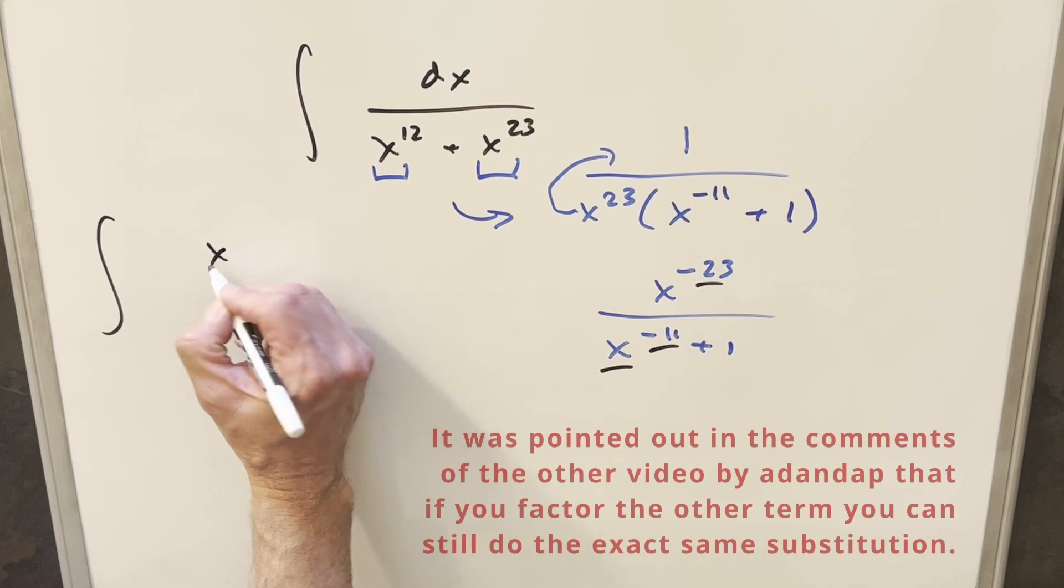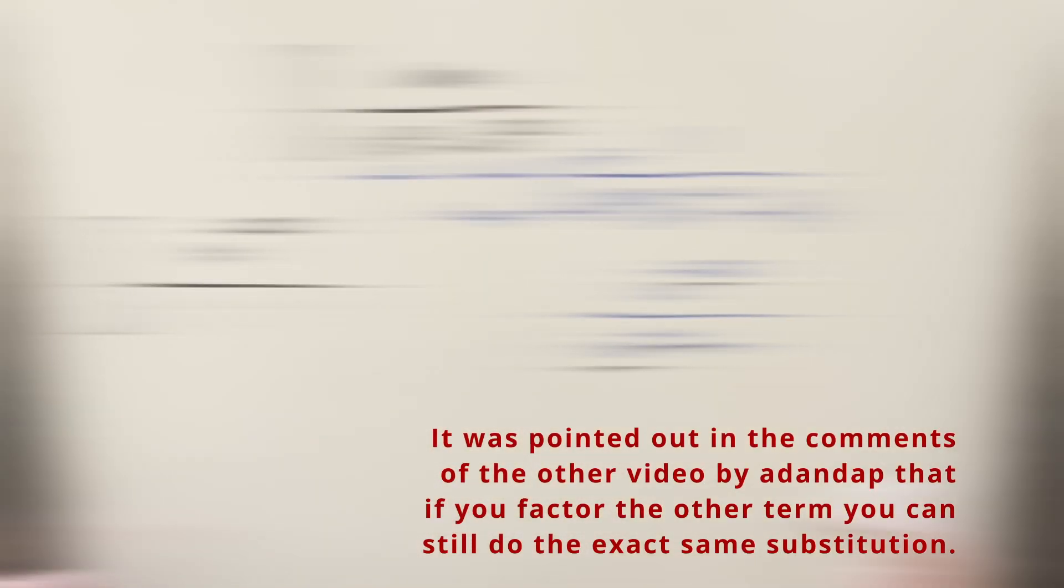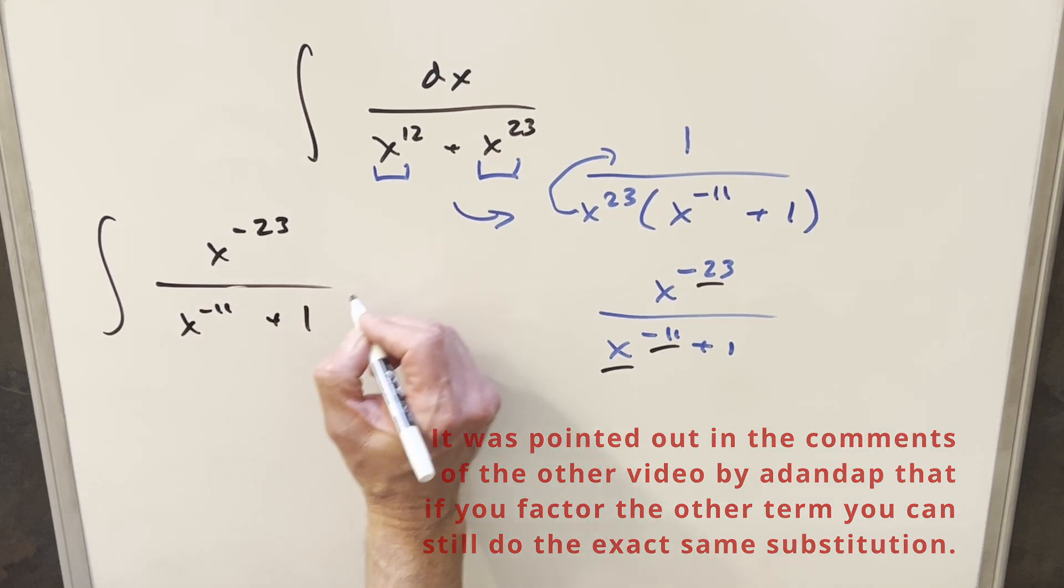So let's go ahead and rewrite it this way. We'll have x to the minus 23 over x to the minus 11 plus 1 dx.